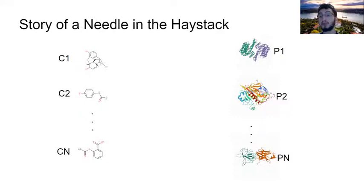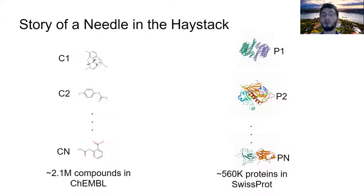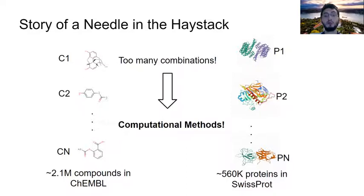But this is a difficult question to answer, actually, because we have around 2 million bioactive compounds in ChEMBL and hundreds of thousands of proteins in UniProt that we can use as targets. So we simply have too many combinations to experiment with in vitro. What we can do is to use computational methods to search this combination space in a fast way.